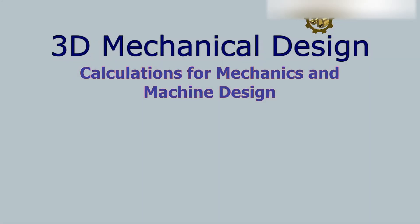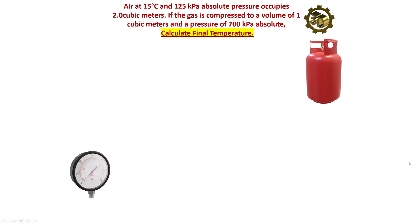Hi, 3D Mechanical Design, Fluid Mechanics. Air at 15 degrees Celsius and 125 kilo pascals absolute pressure occupies 2 cubic meters. If the gas is compressed to a volume of 1 cubic meter and a pressure of 700 kilo pascals absolute, calculate its final temperature.